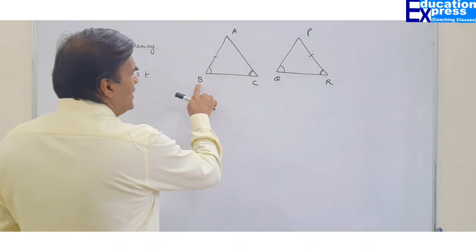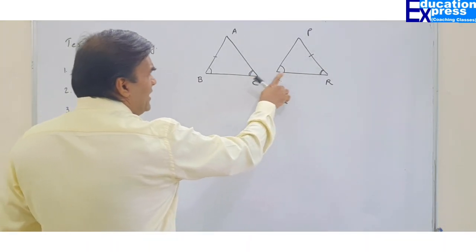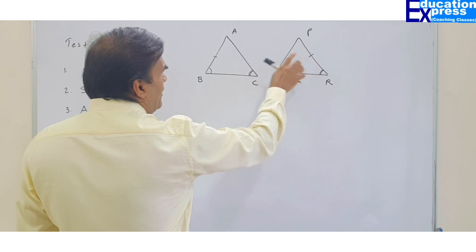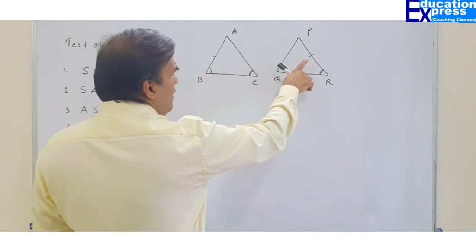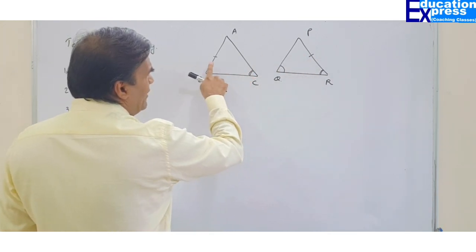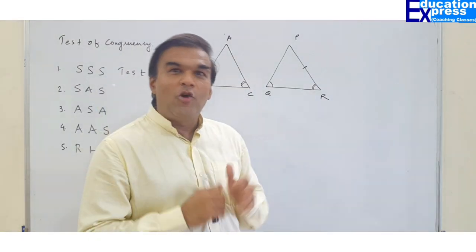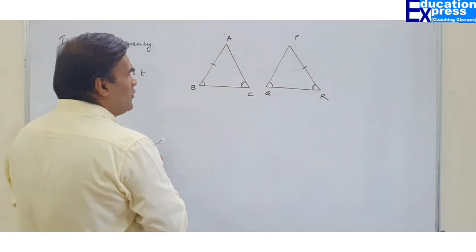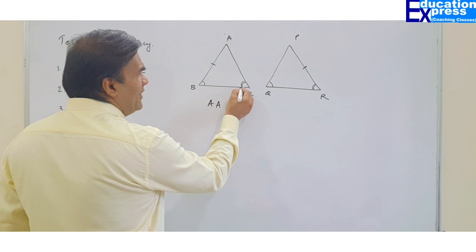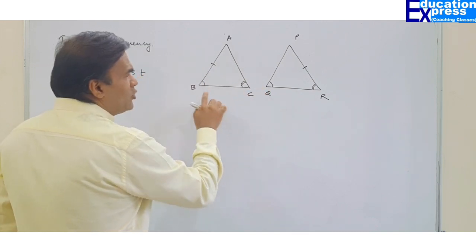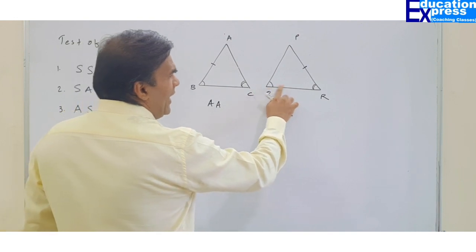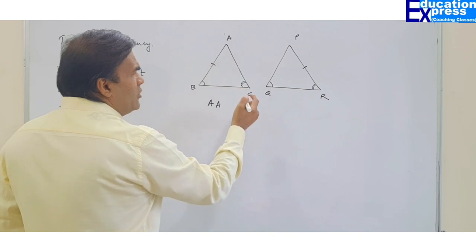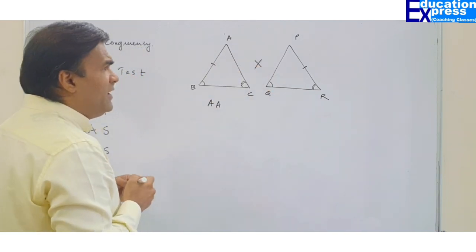First: this angle is equal to this angle. Second: this angle is equal to this angle — so angle, angle. And this is a side. So the pattern here is angle, angle, side. But looking at the other triangle, there is angle, angle — and then no side in between. So one-to-one correspondence is not happening as angle-side-angle. The pattern is angle, angle, side — AAS — whereas ASA requires the side to be between the two angles.